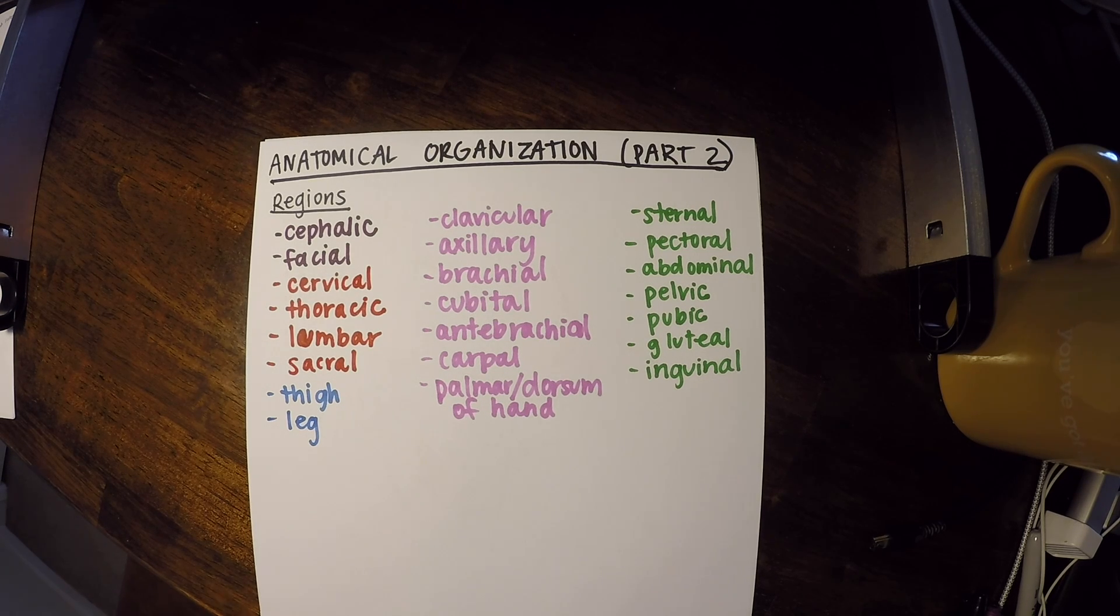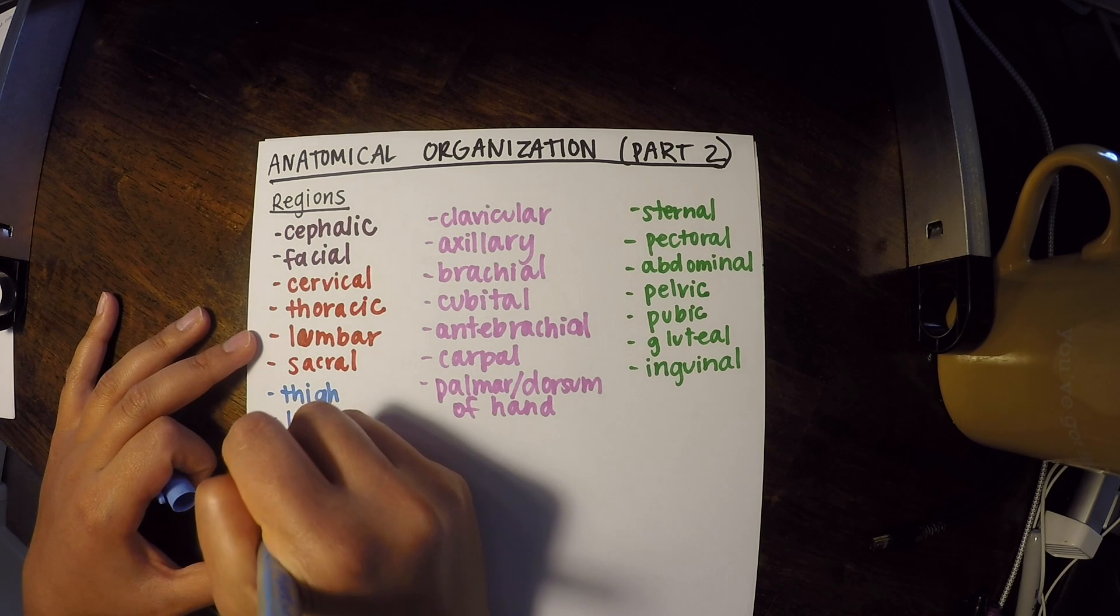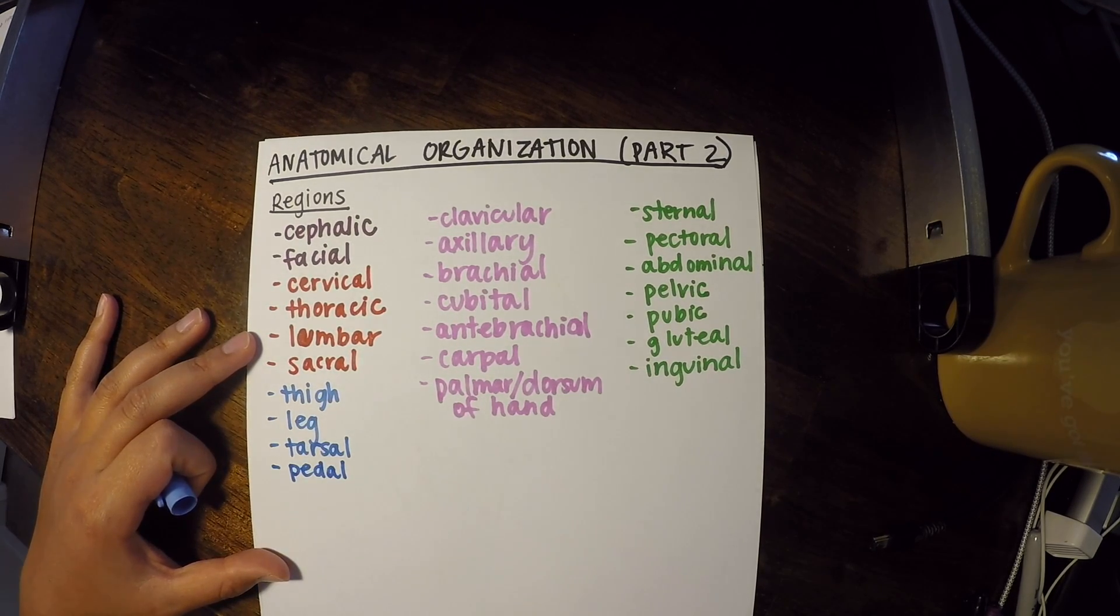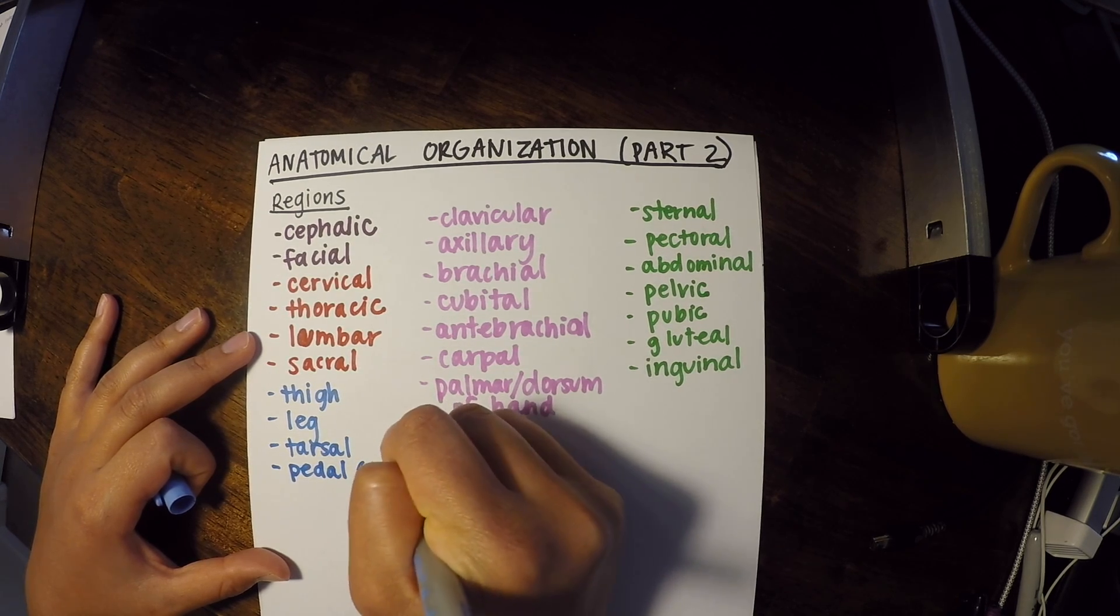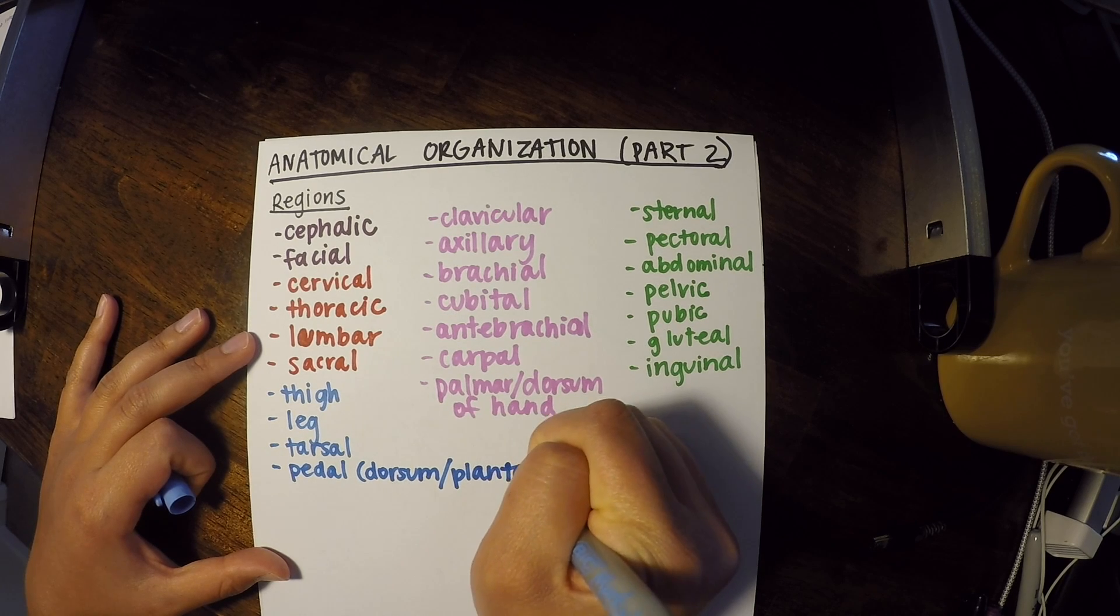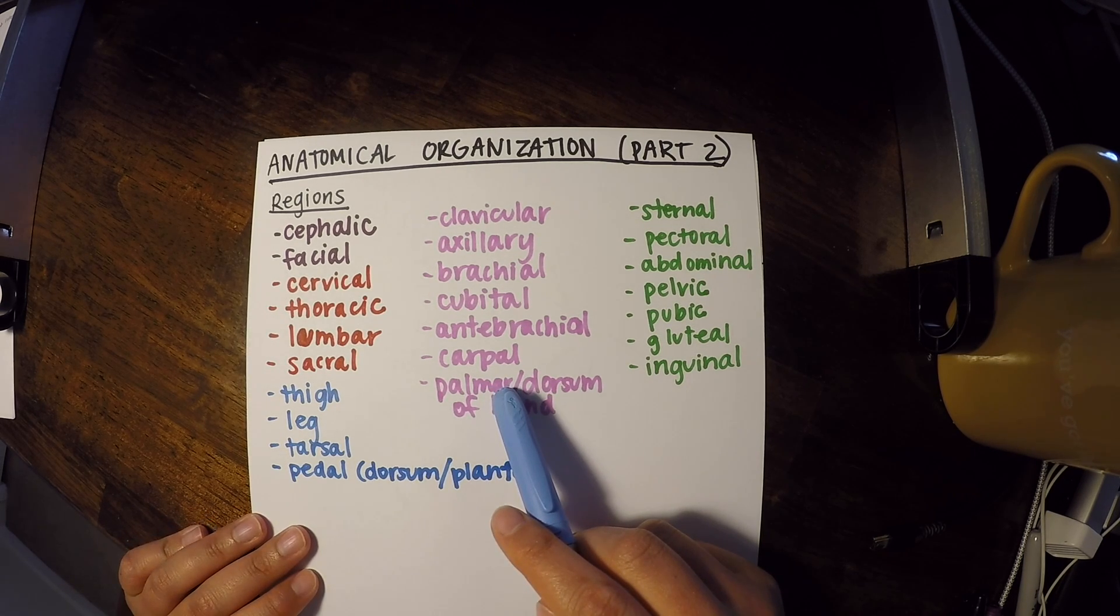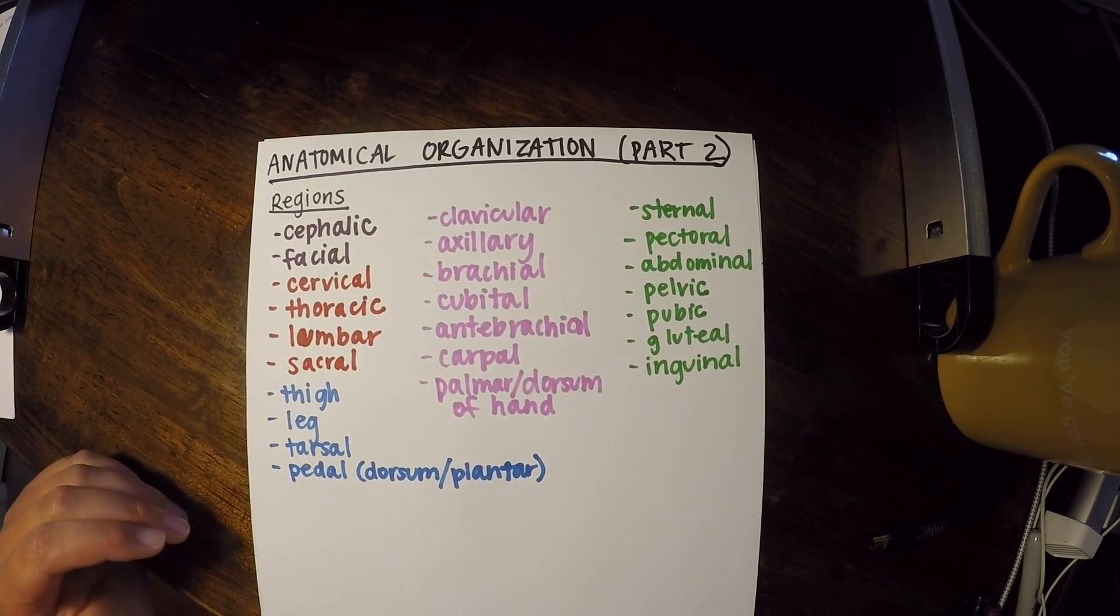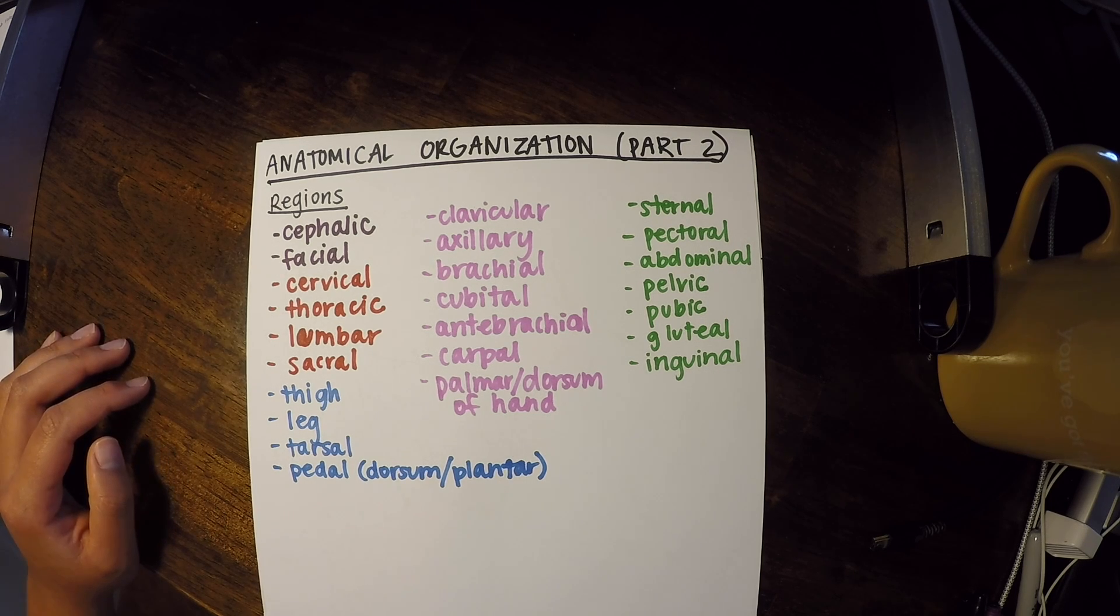Then we also have the tarsal region, which just, tarsal just means ankle. You actually have a tarsal bone there. And then the last thing is pedal, which refers to foot. And I always remember that because you press a gas pedal with your foot. And then you also have the dorsal, dorsum and plantar area of your foot. Now, plantar in your foot is analogous to palmar in your hand. So this right here is the palm of my hand and the bottom of my foot is the plantar surface of my foot. And then this is the dorsum of my hand, and same thing with your foot. The top of your foot is the dorsum.